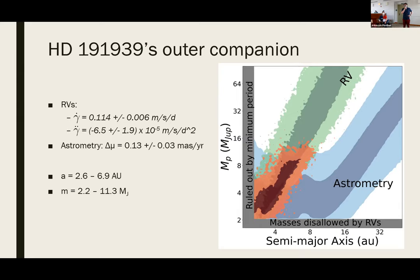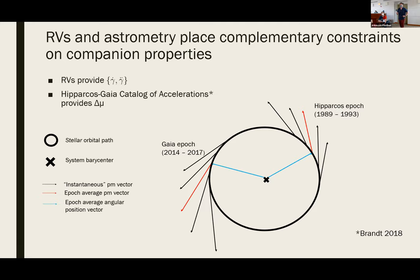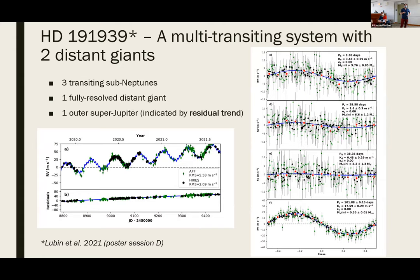The final question: given there are three inner transiting sub-Neptunes, were there any dynamical arguments used to constrain the parameters of the outer companions? Broadly, yes. Jack will have a more insightful answer in his poster talk on the full dynamical picture, but my understanding is that a lot of consideration was given to dynamical interactions between the planets in the system.